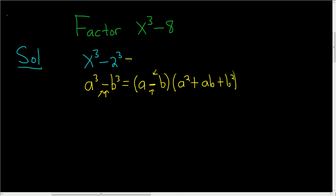To finish, we'll just use the formula. Here we have a is x and b is 2, so we end up with x minus 2.